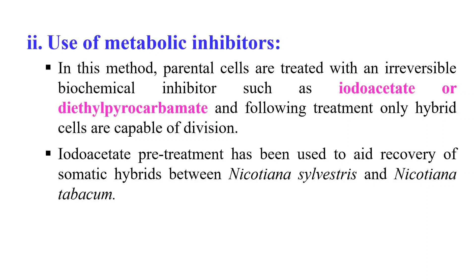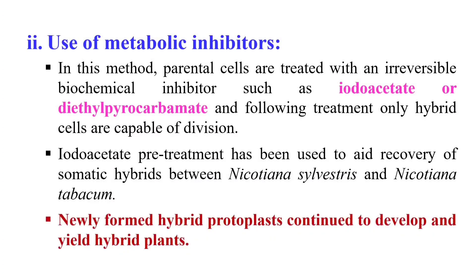For example, Iodoacetate pre-treatment was used for the recovery of somatic hybrids between Nicotiana sylvestris and Nicotiana tabacum. In each case, the protoplasts treated with Iodoacetate were unable to produce. But the newly formed hybrid protoplasts continued to develop and yield the hybrid plant. In the hybrid cells, the cells that were inhibited by this inhibitor — the hybrid cell can still grow after this treatment. So by this method, we can also select our hybrid cells.